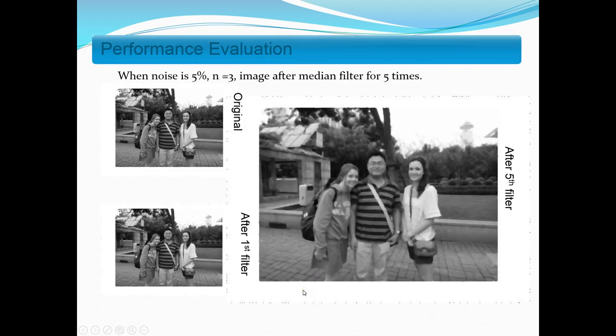I also did another comparison because I found that when the noise percentage is 5% and the window size is 3, after using the median filter, there are still some noises. So I thought: if I apply the filter multiple times, what will happen? This is the same picture after applying the median filter 5 times — the noise is less, but the image quality also drops.